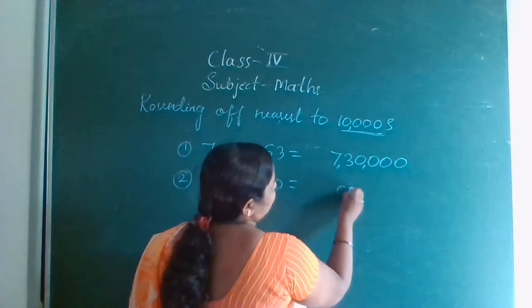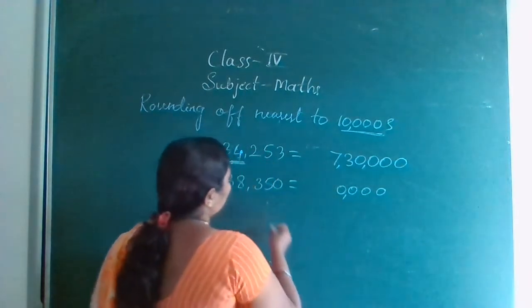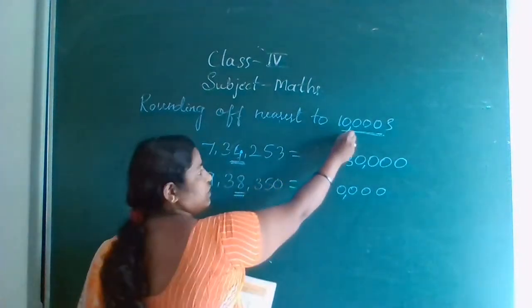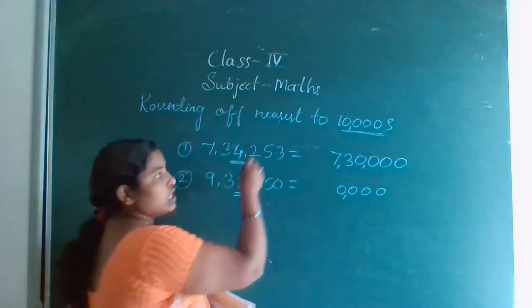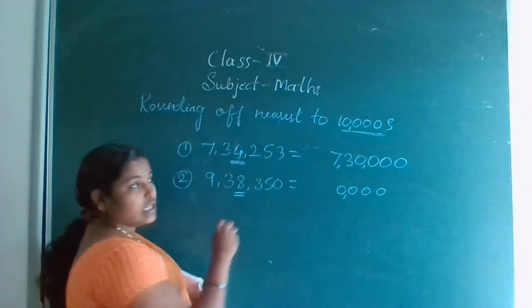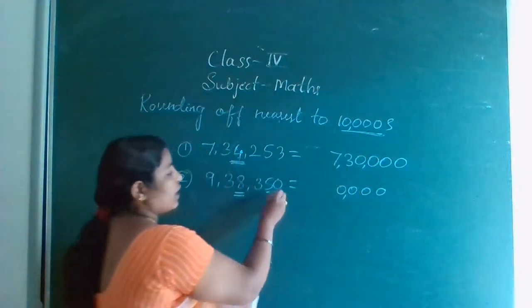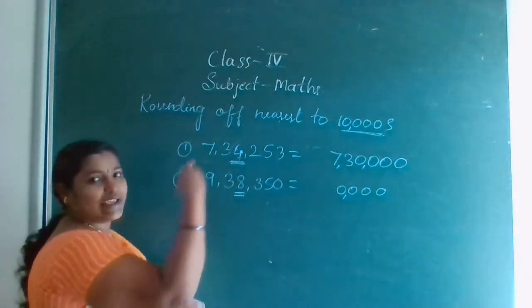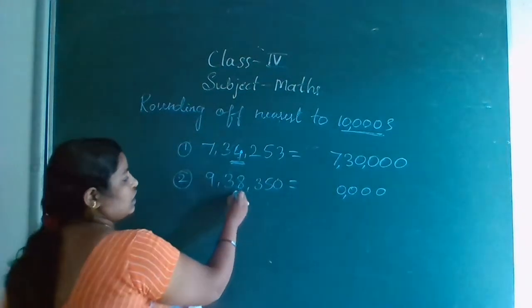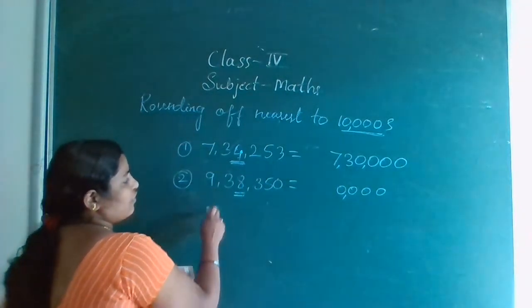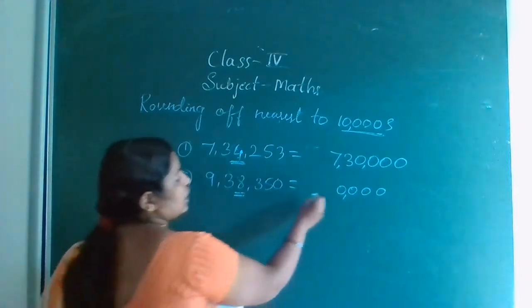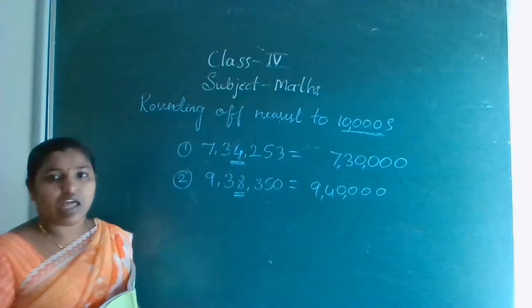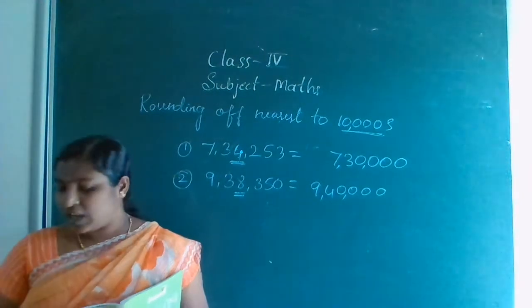For the second problem, 10,000 is having 4 zeros. Look at 1000's place. 10,000 means look at 1000's place; 1000 means look at 100's place; 100 means look at 10's place; 10 means look at 1's place — one place back you should look. The 1000's place here is more than 5, so next number increase by 1: 93 becomes 94. Answer: 9,40,000. This is rounding to 10,000.